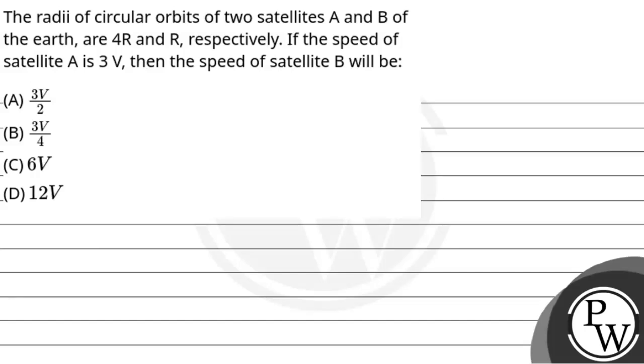Hello, let's see the question. The question says the radius of circular orbits of two satellites A and B of Earth are 4R and R respectively. If the speed of satellite A is 3V, then the speed of satellite B will be.